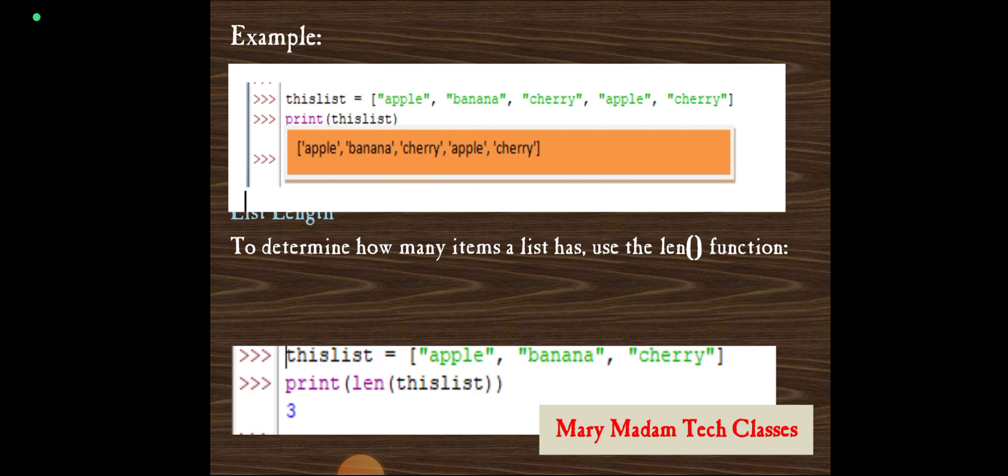List length. To determine how many items a list has, use the length function. What is the list of elements will be known by the length function. If you see the example, thislist equals to apple, banana, cherry. I want to know the length of the list. Print function and also with the length function, observe clearly: print of length of thislist. If you press the enter key, it will give us 3.